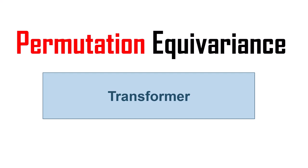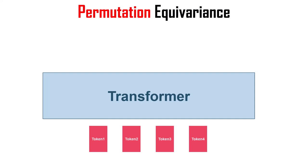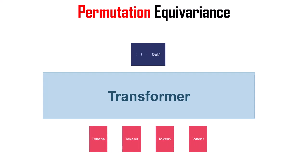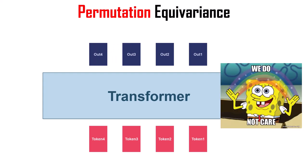If you know transformers, you should know that one of the features they have is what we call permutation equivariance. Permutation equivariance basically means that if I give this transformer a series of tokens — like four tokens in this case — it will generate four outputs. But if I just change the order of these tokens, the output orders will be changed accordingly while they're still the same. In general, transformers do not care about the order of these tokens.